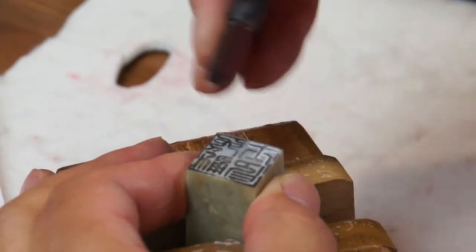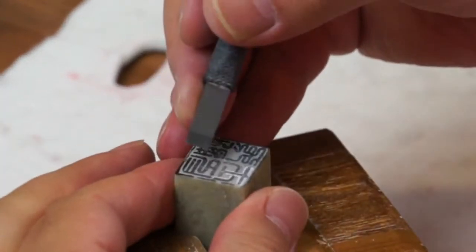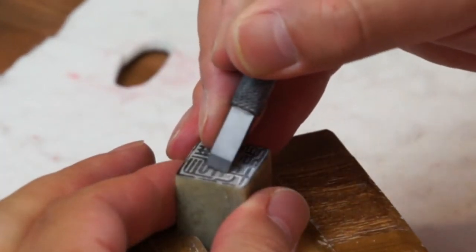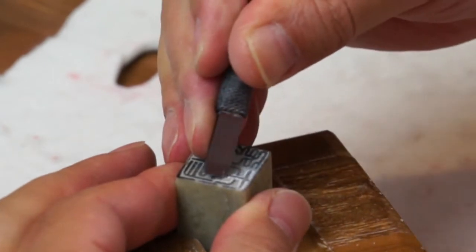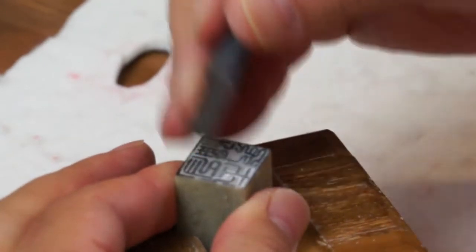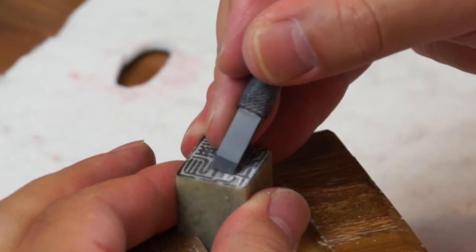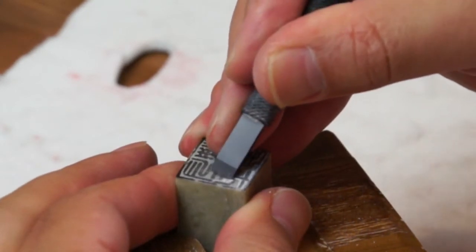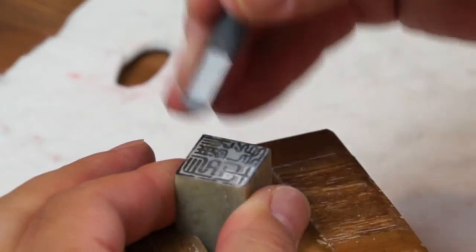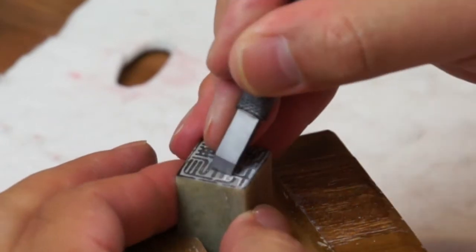So I cut the outline first with care and then I will do the scooping to cut out the background. It's very delicate when you reach the corners. Try to make it as natural as possible. Instead of a 90 degree corner, I always make it organic.